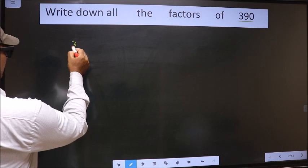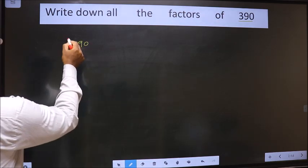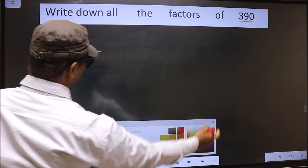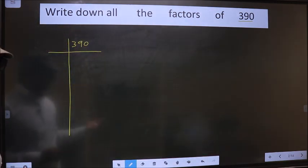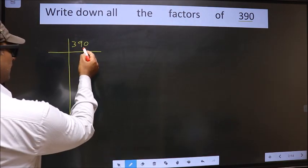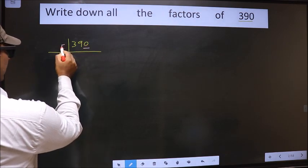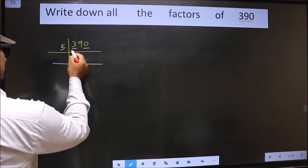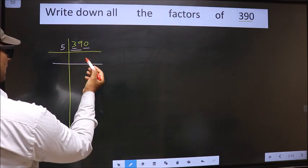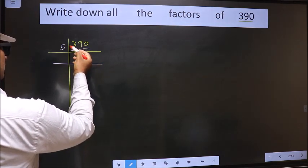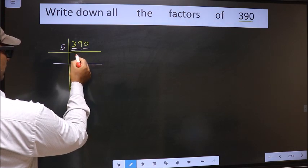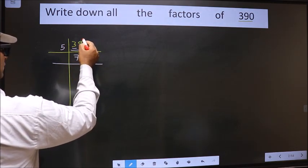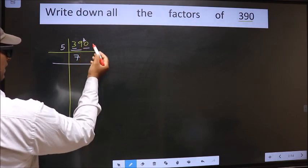That is 390. Now here last digit 0, so we take 5 here. First number 3 smaller than 5, so we take 2 numbers that is 39. A number close to 39 in 5 table is 5 7s 35. 39 minus 35 is 4, 4 carried forward making it 40.